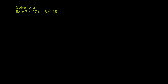Solve for z. 5z plus 7 is less than 27, or negative 3z is less than or equal to 18. So this is a compound inequality — we have two conditions here. Z can satisfy this condition or z can satisfy that one over here. So let's solve each of these inequalities separately, knowing that z can satisfy either of them.